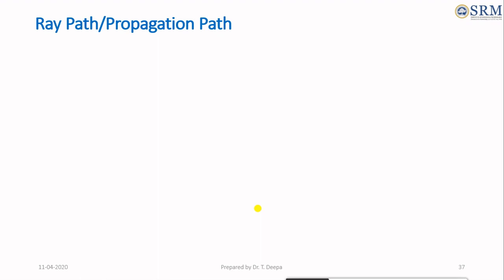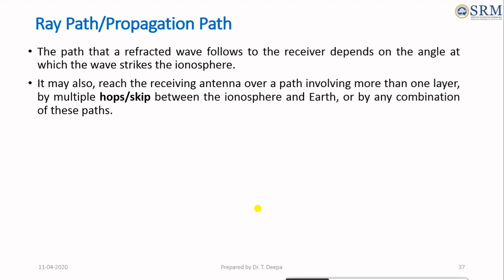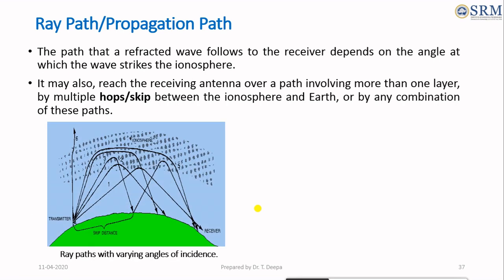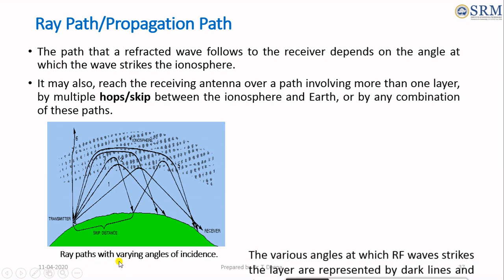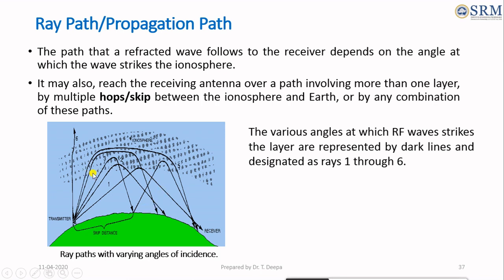What is ray path? The first key factor is ray path, also called propagation path. The path that the refracted wave follows to the receiver depends on the angle at which the wave strikes through the ionosphere. The figure shows how radio waves reach a receiver via several paths through the ionospheric layer with varying angle of incidence. The radio waves are represented by dark lines and designated as ray 1, ray 2, ray 3, ray 4, ray 5, and ray 6.